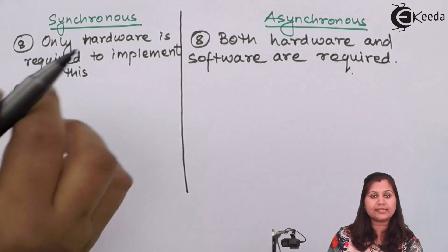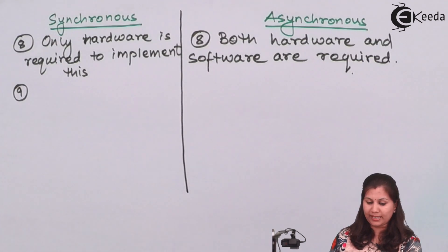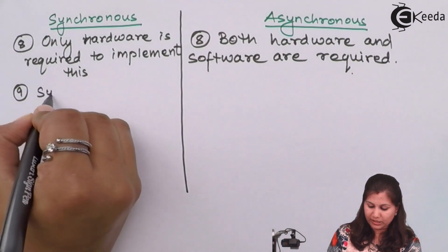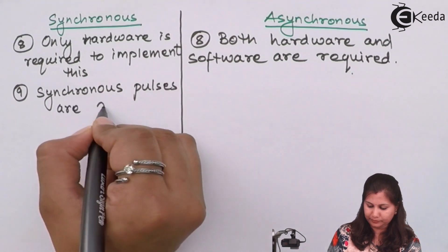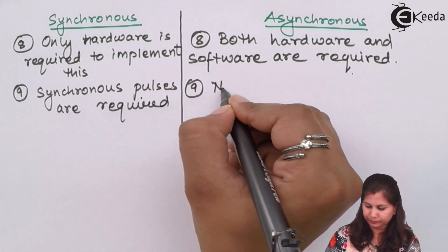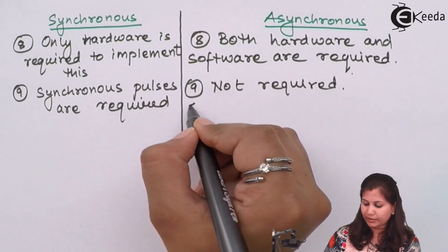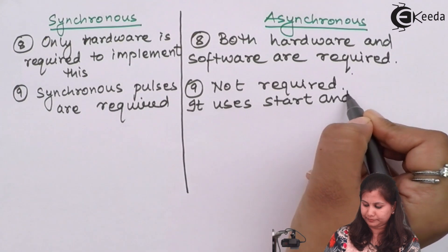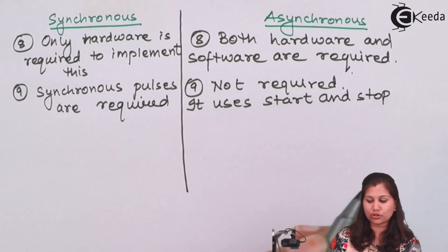The next difference is that in synchronous, synchronous clock pulses are required. Whereas in asynchronous, no synchronous pulses are required because no clock pulse is used in this method. Instead, start and stop bits are used.